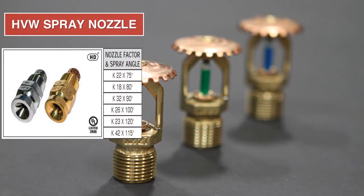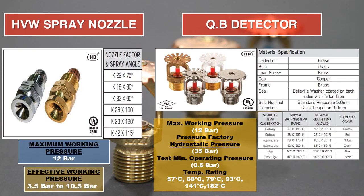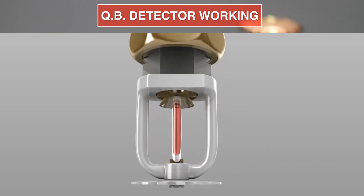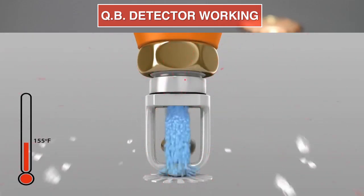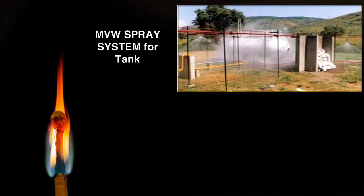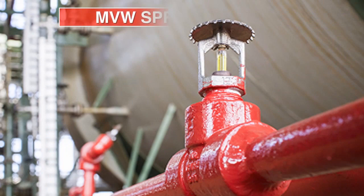We will see the technical specifications of high-velocity spray nozzles and QB detectors. The K factor and angle play a vital role in covering the fire extinguishing area. The QB detector senses the threshold temperature limit and bursts, which leads to the spray of water.